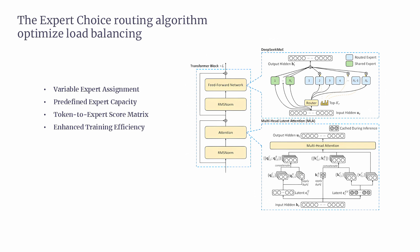The fourth feature is enhanced training efficiency. By improving how tokens are routed, EC routing speeds up the training process. In fact, models using EC routing have been shown to converge more than twice as fast during training compared to traditional top-K gating methods. This means that not only does the training process get faster, but the model's overall performance improves, especially on more complex tasks.